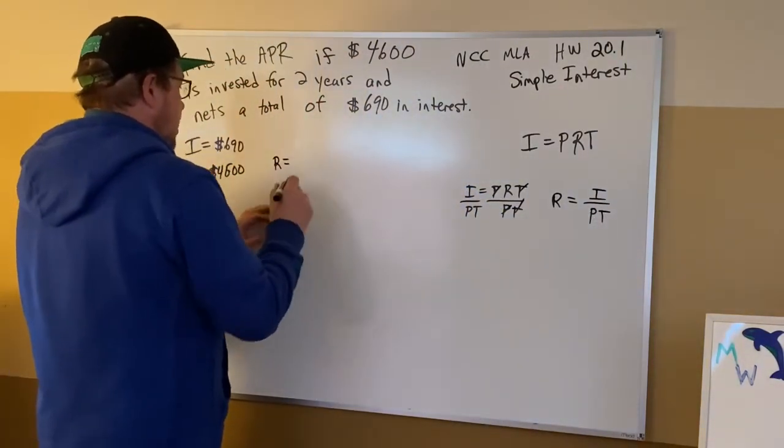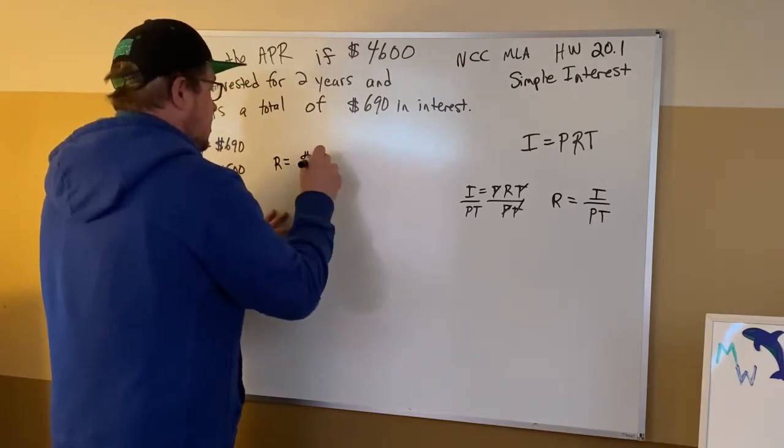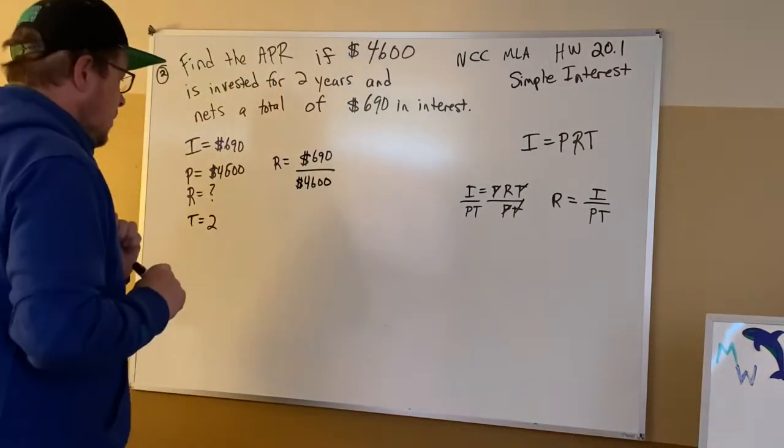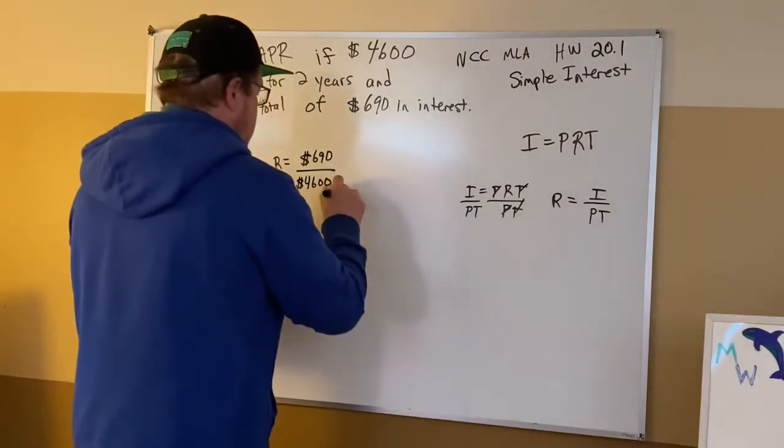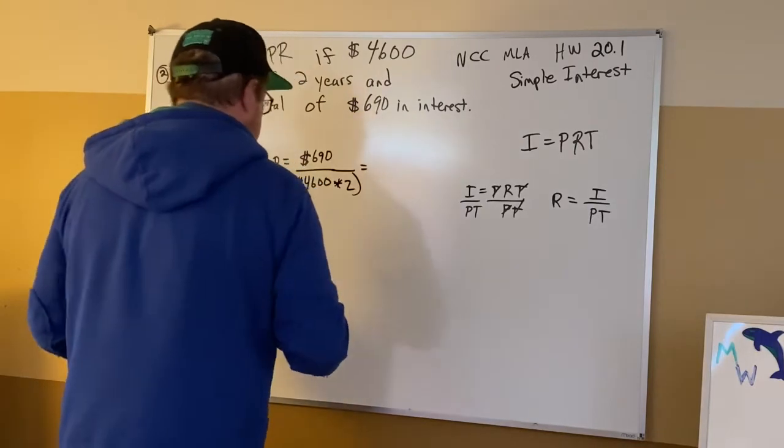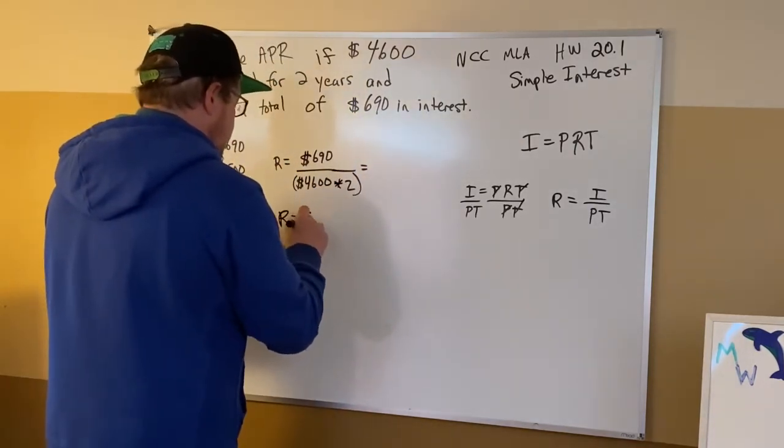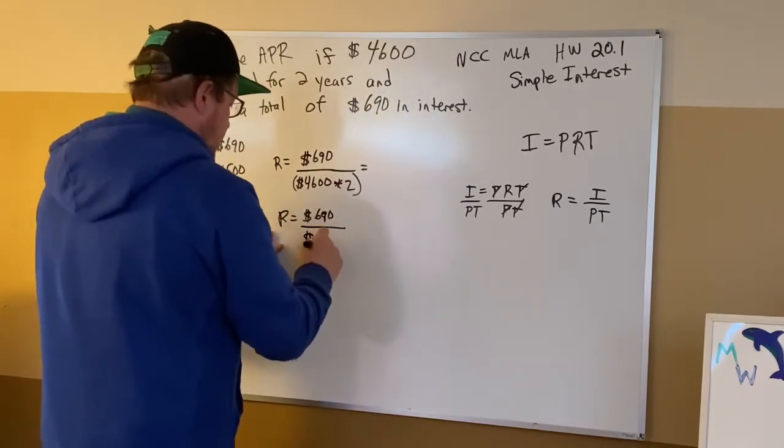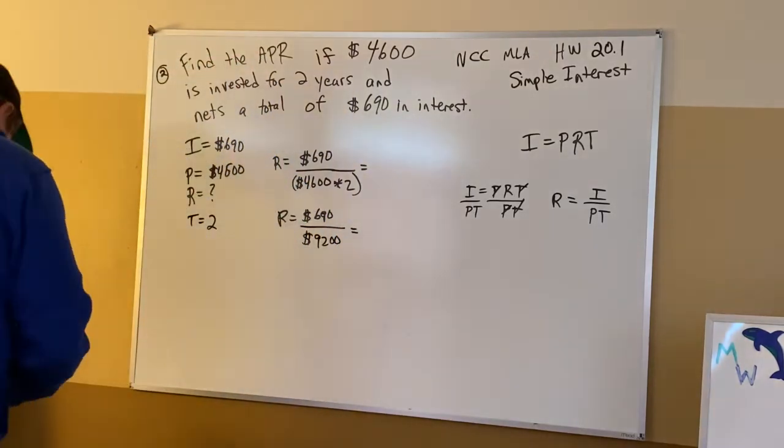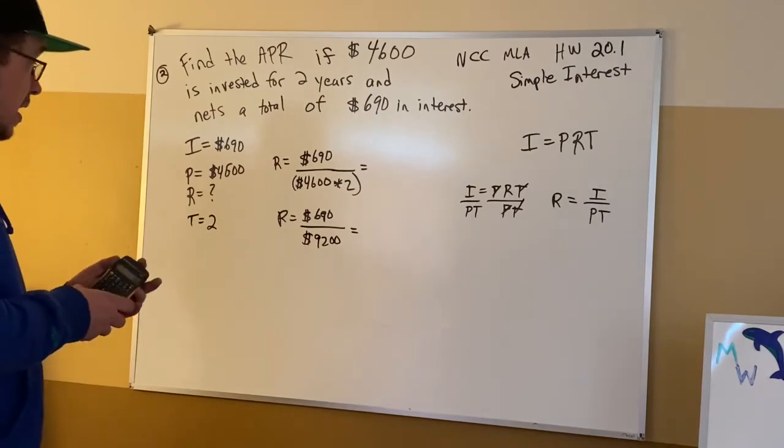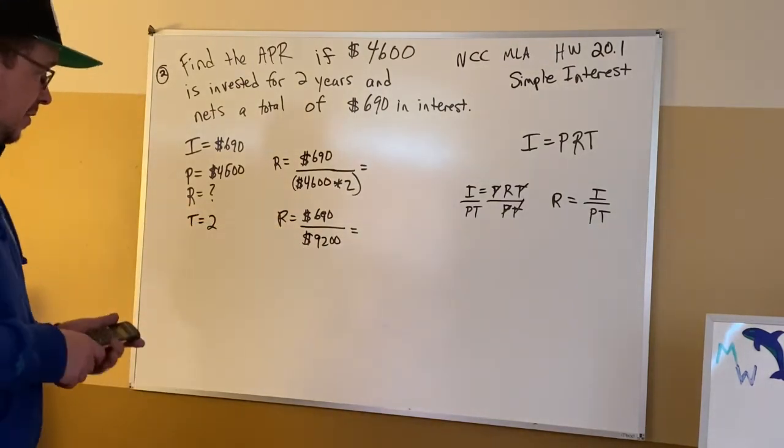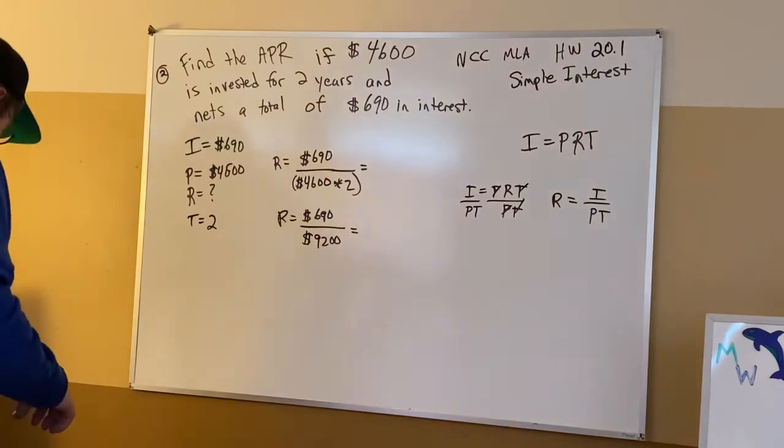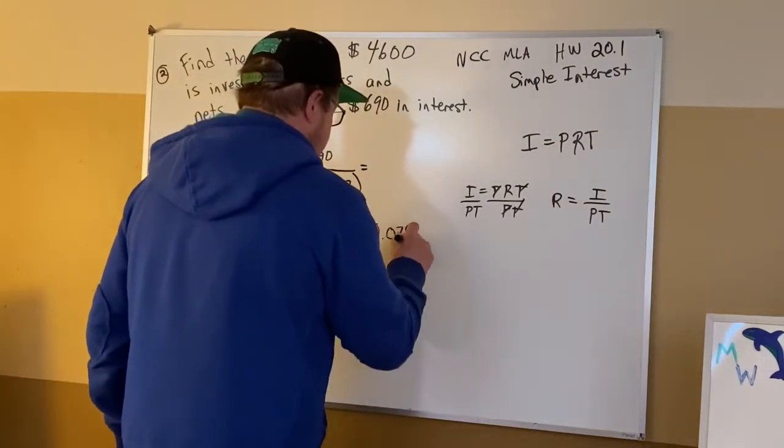Therefore R will be equal to my interest rate of $690 over P, which is $4,600, and T, which is two. So if you bring these two together, we're still going to have $690, and we're going to divide that by doubling the $4,600 to $9,200. So $690 divided by $9,200. Make sure you have the right number of zeros in each case, and that equals 0.075.